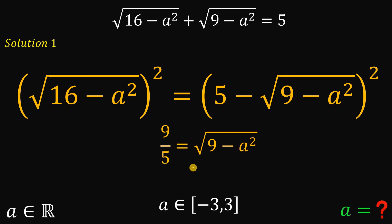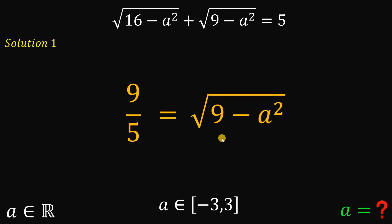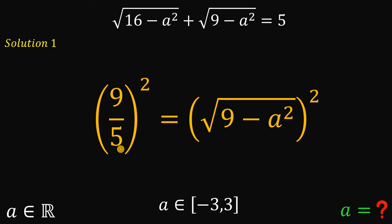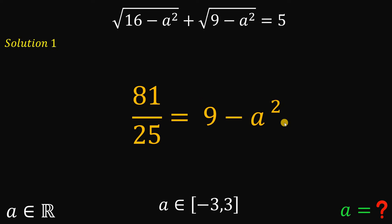Let's focus on this equation to solve for the value of A. We square both sides to eliminate the square root. On the left-hand side, we have 81 over 25, which is 9 squared over 5 squared. The square and square root on the right-hand side cancel out, giving us 9 minus A squared.